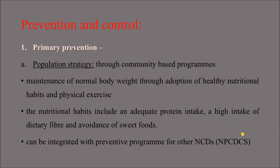Regarding prevention and control of diabetes — we shall discuss primary, secondary, and tertiary prevention. In non-communicable diseases, before primary prevention comes primordial prevention — the prevention of emergence of risk factors. We must not allow risk factors to develop so that we never get exposed to them. Once risk factors are already present but the disease has not yet developed, the role of primary prevention comes in.